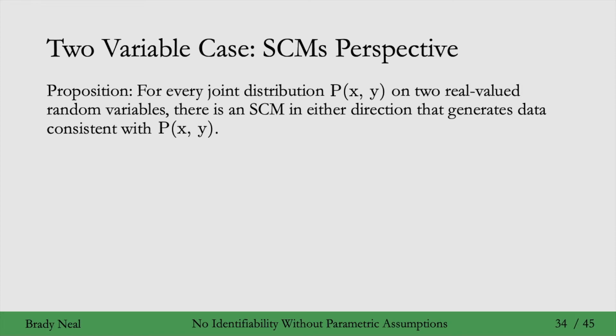Well, unfortunately, it turns out that's not the case. So there's this proposition that for every joint distribution, P(X, Y), on two real valued random variables, there is an SCM in either direction that generates data consistent with that distribution.